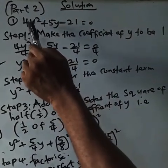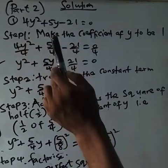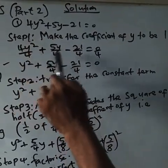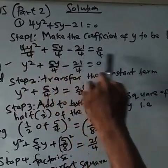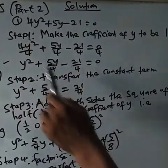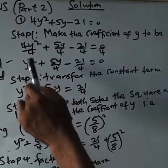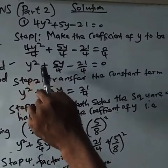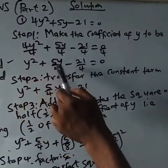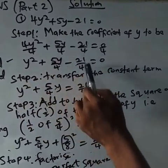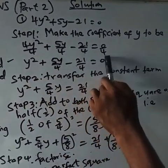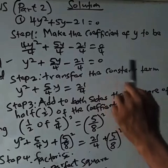You divide through by four to make the coefficient one — everything over four. So you get y squared plus 5 over 4y minus 21 over 4 equals zero, since zero over 4 is zero.